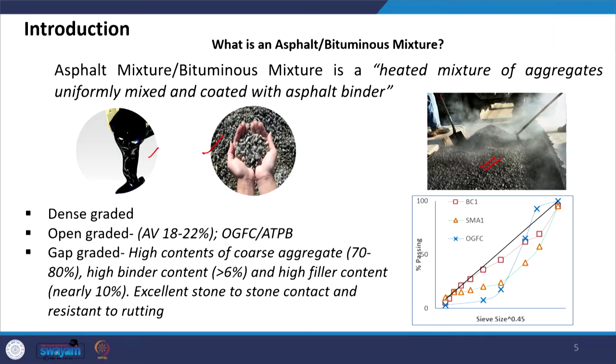Depending on the aggregate gradation chosen for making the bituminous mixture, we can have different types. This mixture I am holding is a dense mixture — you can see the surface is very smooth. I also have another mixture which is a bitumen-rich mixture, more gap-graded in nature. You can see it is a coarse-graded mixture with coarse particles and very high bitumen content — notice the shine in the mix. This is a gap-graded mix which is produced.